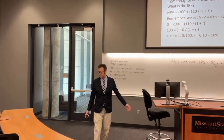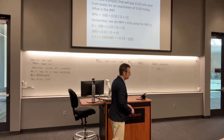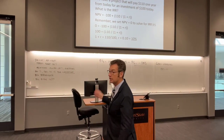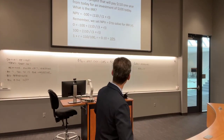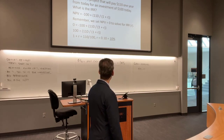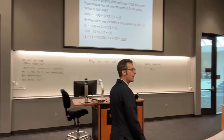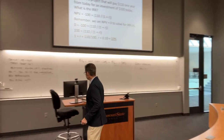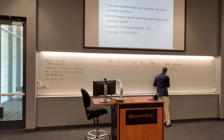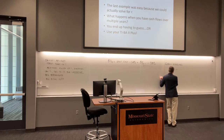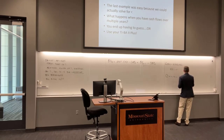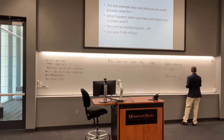Simple example: a project pays $110 a year from today, and the investment is $100. What's the IRR? We don't know the discount rate, so we set up the NPV formula: negative initial investment plus present value of the future cash flow equals zero, and solve for R. We can easily see R equals 10%. But what if we had multiple cash flows — say, negative $100 plus $110/(1+R) plus $20/(1+R)² plus $30/(1+R)³ equals zero? Can anyone solve that for R analytically?